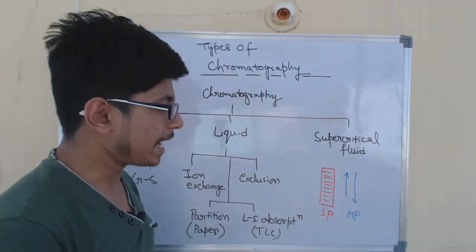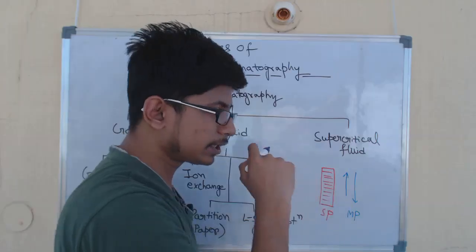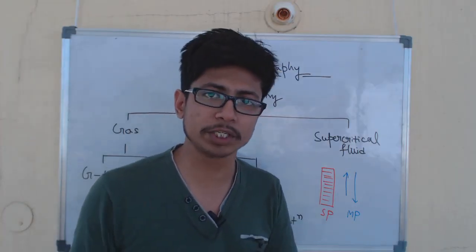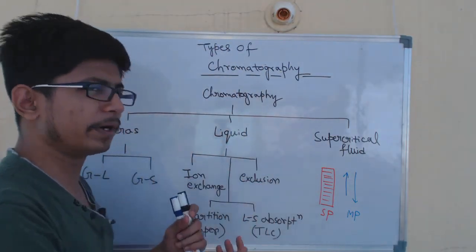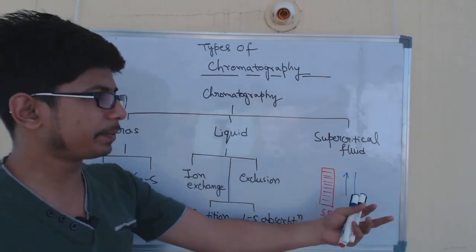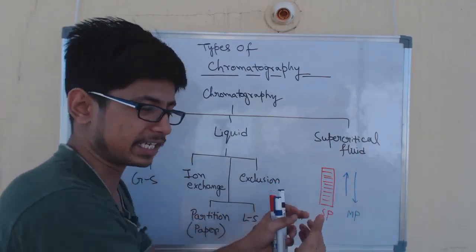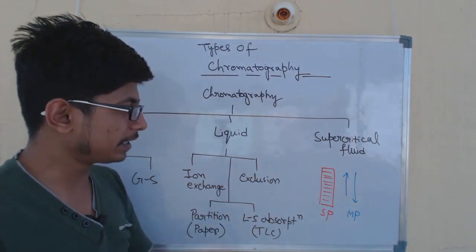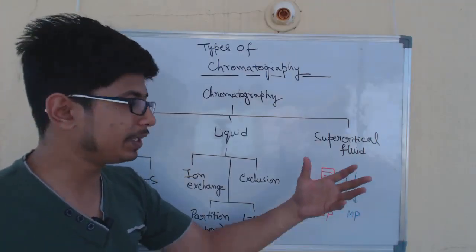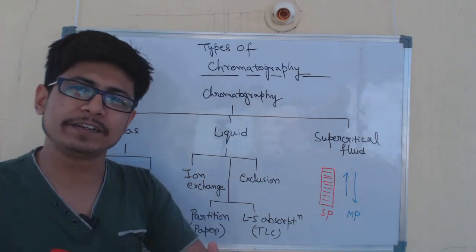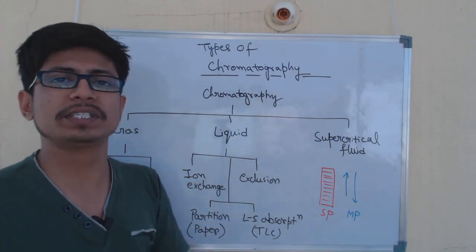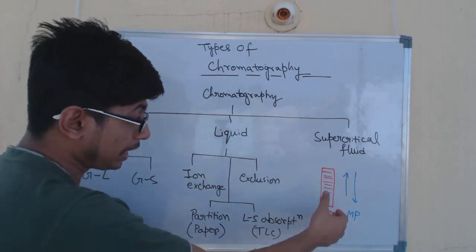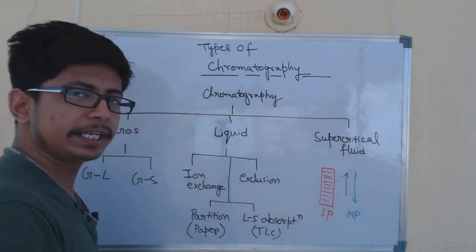So two different phases are present, and chromatography is all about separation of molecules based on their multiple properties like charge, size, and so on. Different molecules will interact with these phase separations in different ways, and that allows the molecules to be separated from each other. The stationary phase could be solid or liquid, while the mobile phase can be either liquid or gaseous.